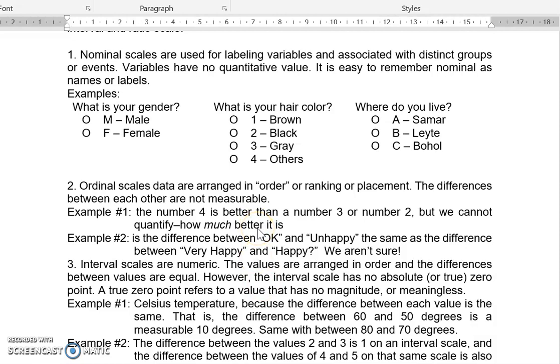But it is not exhibited in numerical form. That's an example of ordinal. Any type of qualitative data that you can organize or place in order that you can arrange sequentially. So this is ordinal scale.